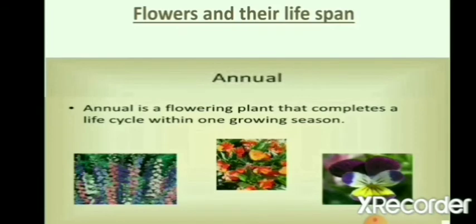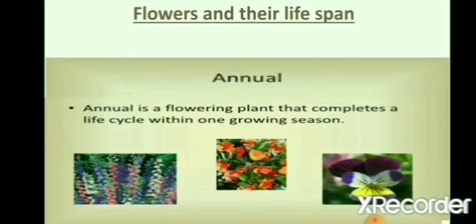Now, we are going to study about flowers and their lifespan. Annual, biennial, and perennial are the categories based on which flowers are classified according to their lifespan. Annual flowers have a lifespan of one year in which they grow to full size, bloom, produce seeds, and die. For example, marigold, sunflower, etc.